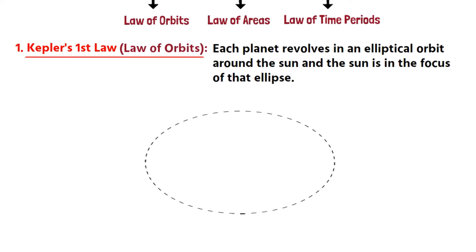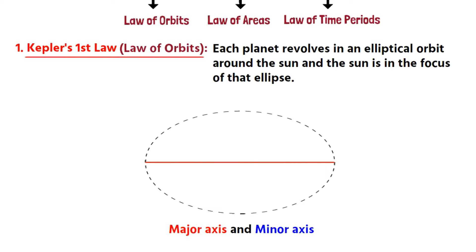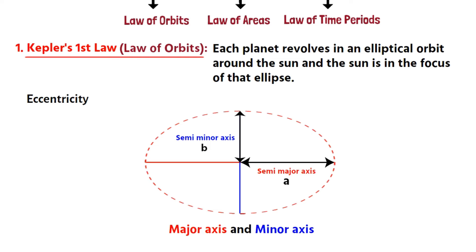An ellipse has two axes: a major axis and a minor axis. The major axis is the longest diameter of the ellipse, going through the center from one end to the other at the broader part. The minor axis is the shortest diameter, crossing through the center at the narrowest part. Half of the major axis is called the semi-major axis, denoted by a, and half of the minor axis is called the semi-minor axis, denoted by b. An ellipse is a shape that resembles a flattened circle. How much the circle is flattened is expressed by its eccentricity, represented by the Greek letter epsilon. The relationship is: epsilon = √(1 − b²/a²).